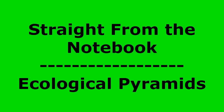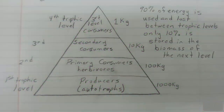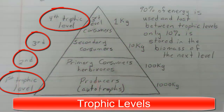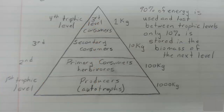Welcome aboard the Biotrain. This video is straight from the notebook with ecological pyramids. Ecological pyramids represent the trophic levels in a food chain. The trophic level is the position that an organism takes in a food chain.